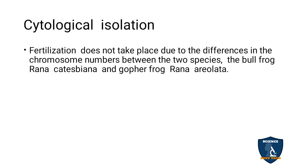Cytological isolation: fertilization does not take place due to differences in chromosome numbers between the two species. The bullfrog Rana catasibiana and the gopher frog Rana areolata — the fusion of gametes won't take place because the chromosome number varies between these two frogs. The chromosome number can also isolate two species and prevent fertilization from taking place.